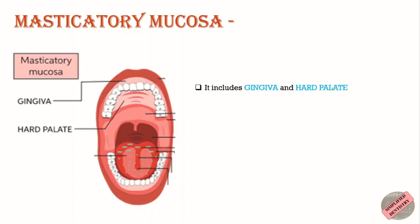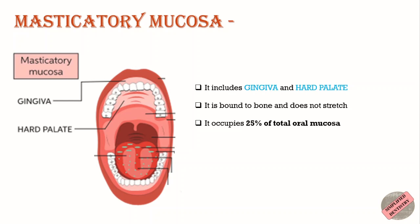As the name suggests, masticatory mucosa is present in the region which aids in mastication. It includes the gingiva and the hard palate. It is bound to the bone and it does not stretch. It occupies 25 percent of the total oral mucosa.